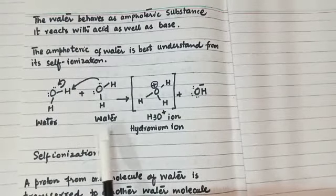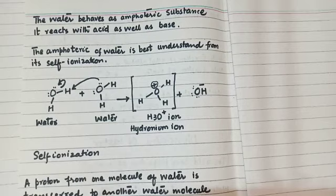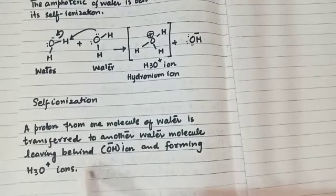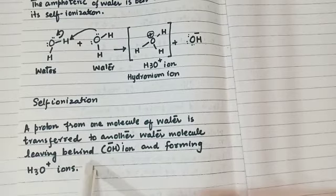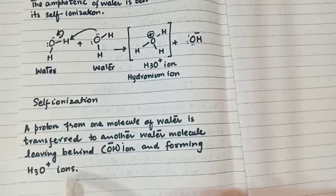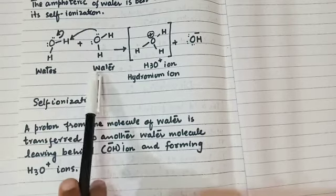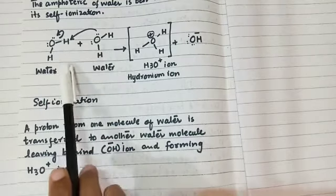In self-ionization of water, a proton from one molecule of water is transferred to another molecule, leaving behind OH-ion and forming H3O-positive-ion. A proton of water is transferred to another water molecule.